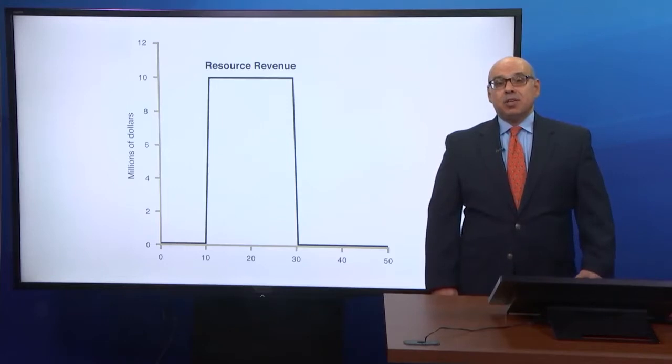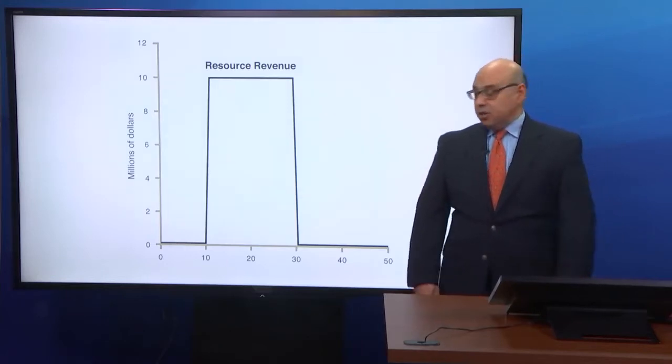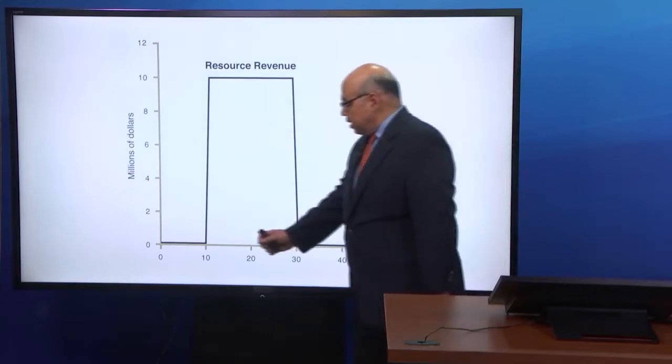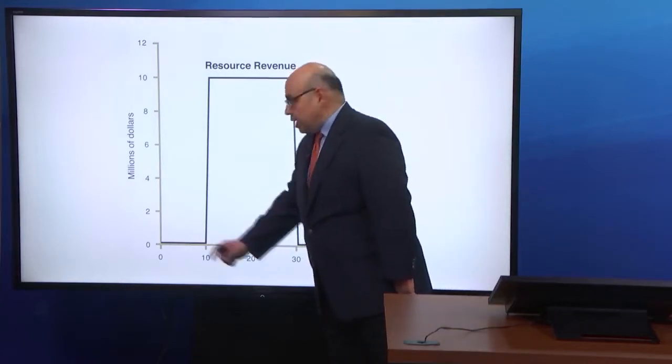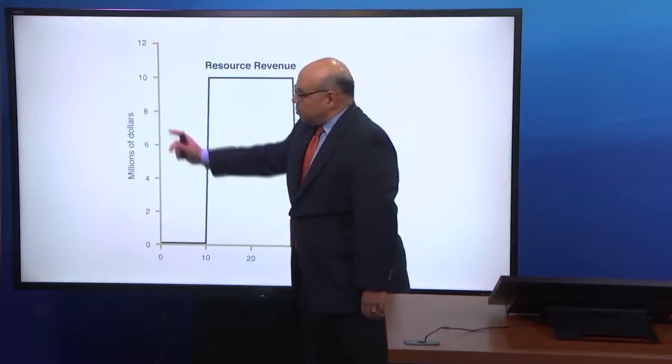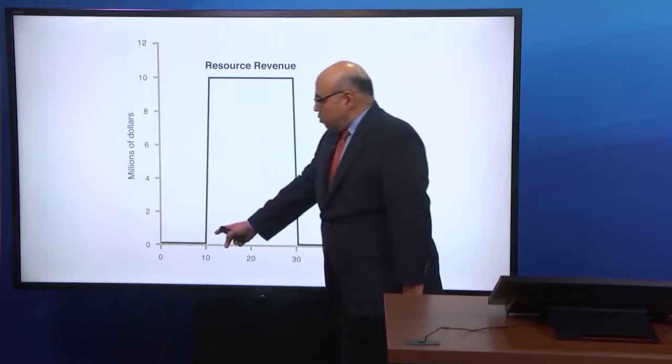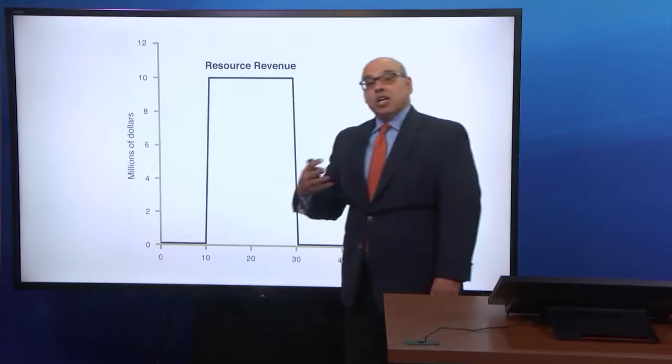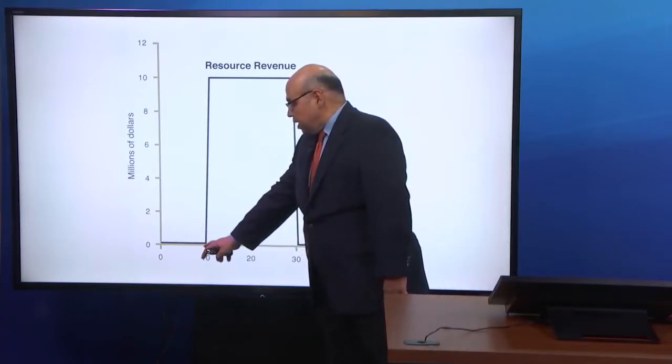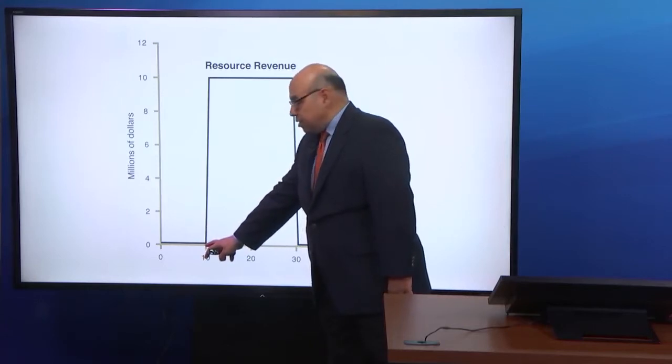So now let's look at an example of a permanent income hypothesis at work. This is a country that has discovered oil, but only 10 years from today. On the vertical axis, resource revenue is plotted in terms of millions of dollars. So at point zero, which is currently where we're sitting, the government finds out that they have discovered oil, and production is going to start in year 10.